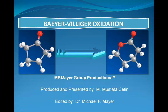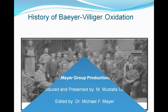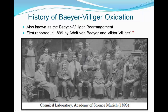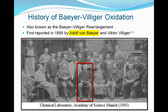In this video, the Baeyer-Villiger oxidation will be discussed in detail. The Baeyer-Villiger oxidation, also known as the Baeyer-Villiger rearrangement, was first reported in 1899 by Adolf von Baeyer and Victor Villiger. Adolf von Baeyer was a highly prominent chemist, and in recognition of his services in the advancement of organic chemistry and the chemical industry through his work on organic dyes and hydroaromatic compounds, he was awarded the Nobel Prize in Chemistry in 1905.